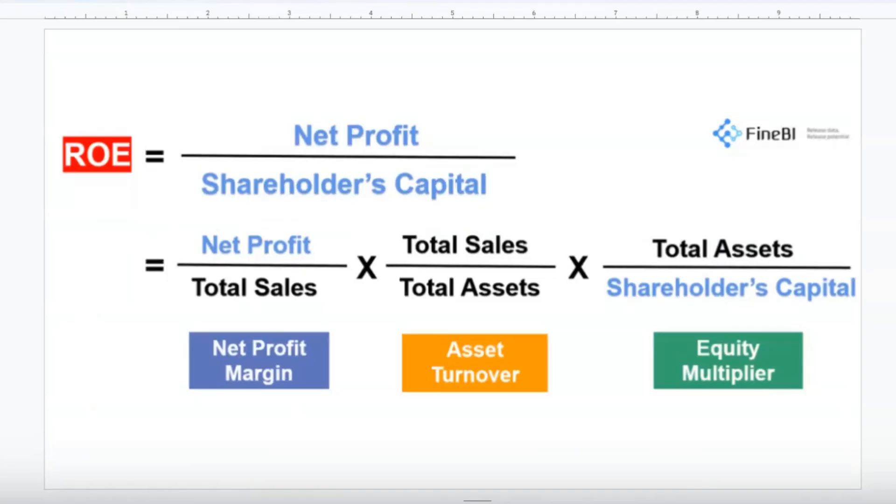The reason the DuPont analysis has been made so popular is because it has taken this very simple ROE formula — net profit divided by shareholders' capital or equity — and divided it into three different sections.